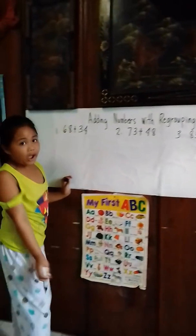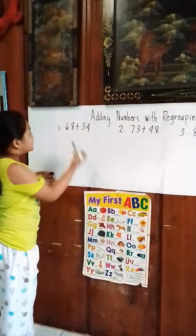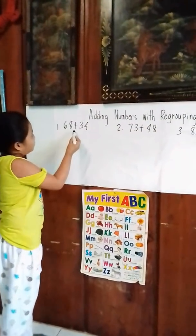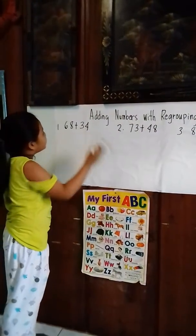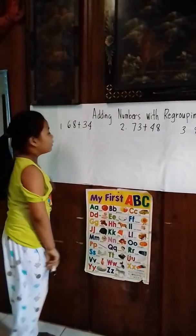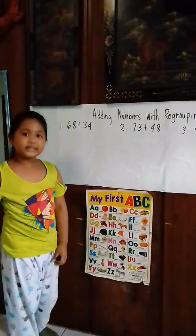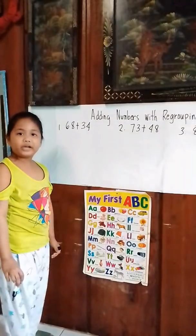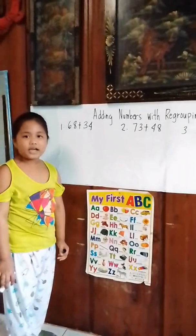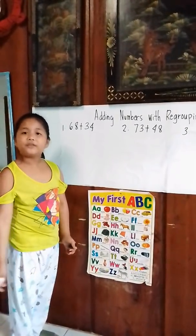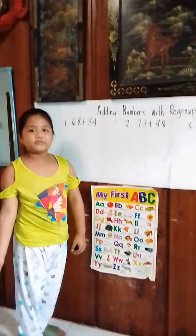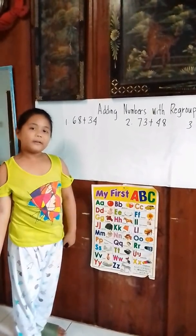Number one: 68 plus 33. What is the grouping of 68 and 33? Let's find out.